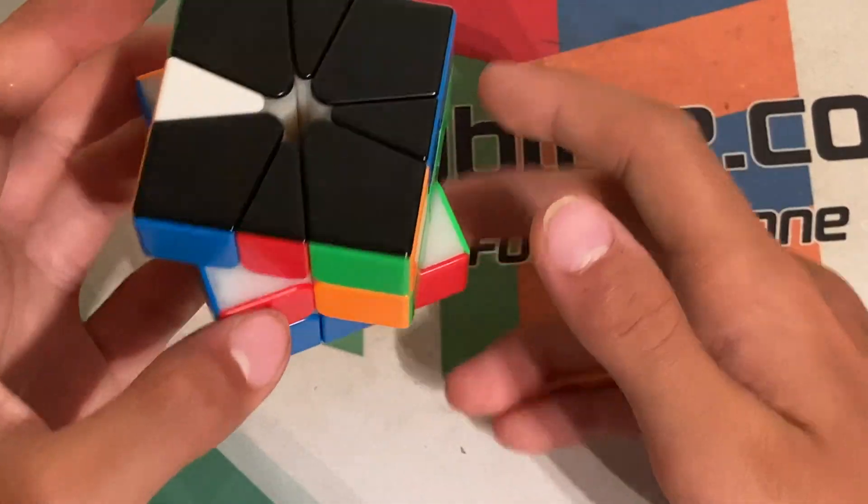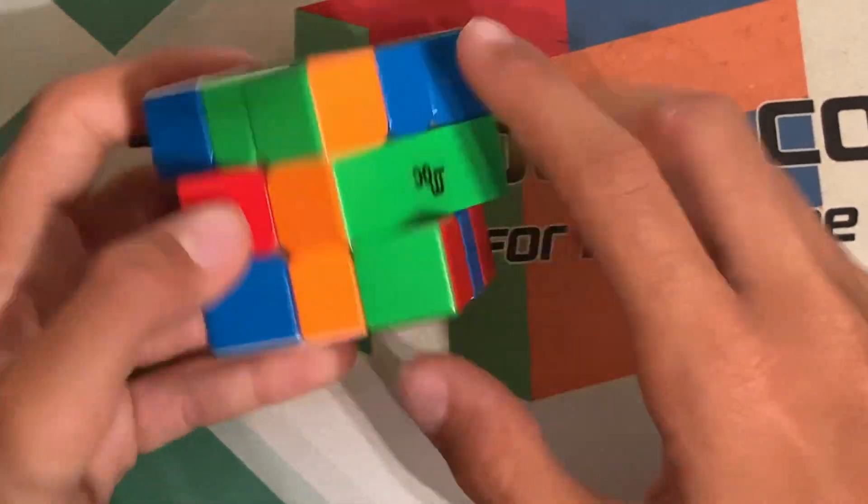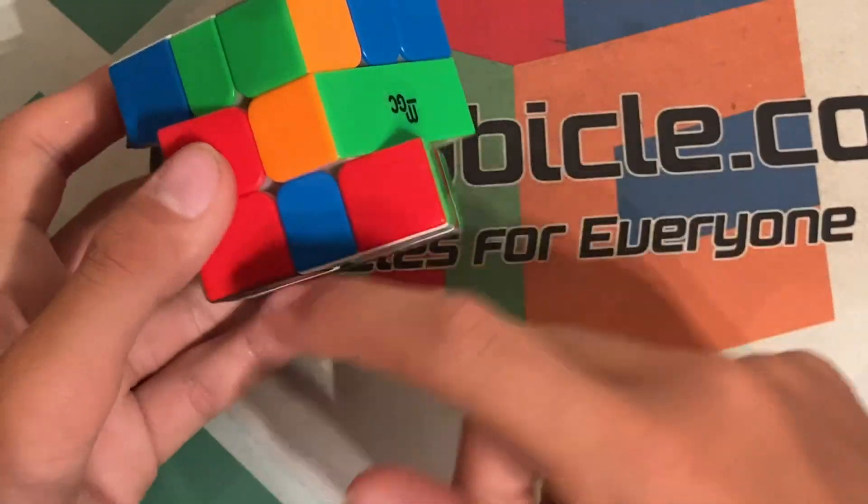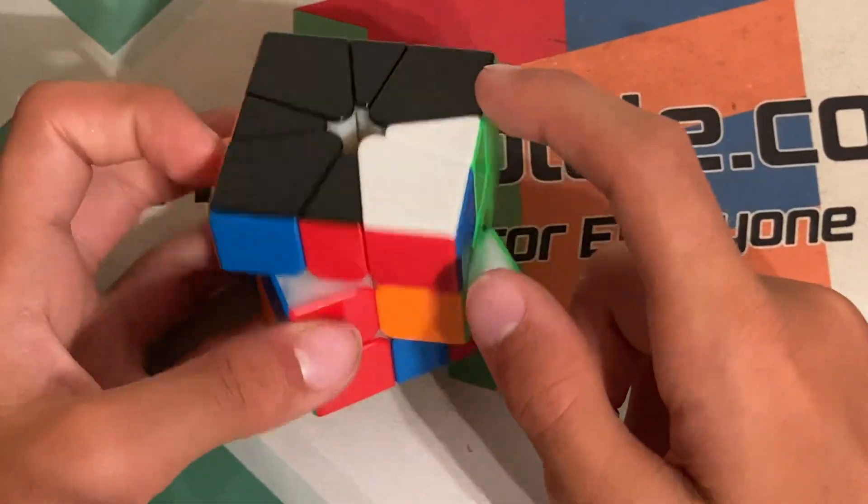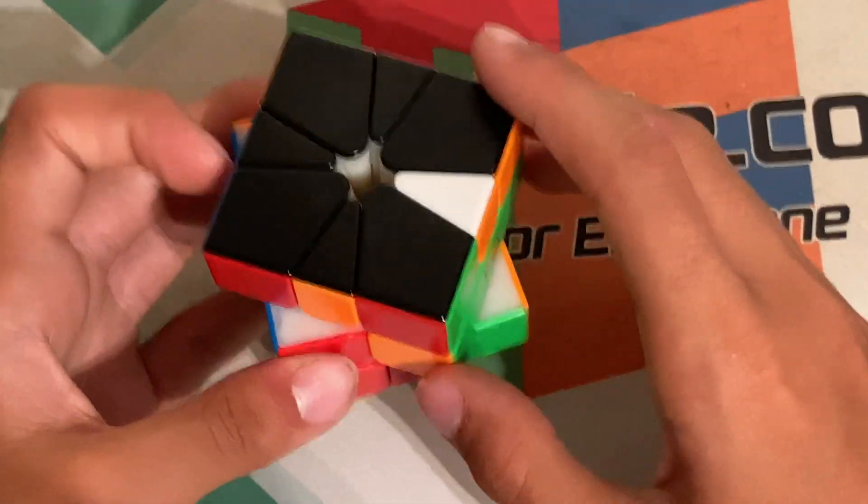And now let's get on to corner orientation. Now corner orientation is pretty intuitive, but you should know all the algorithms and many angles to do it from. For example, this case when the corner is right below this block of two, you can do this. Or when it's over here, you can move this over and then do this. Or when it's back here, you can also do this.